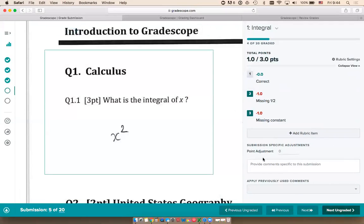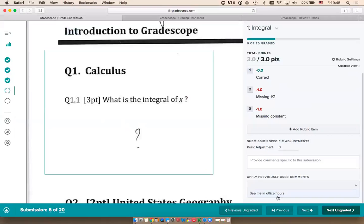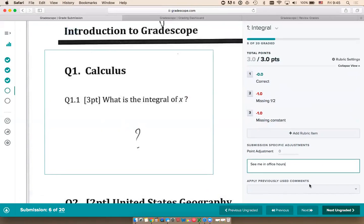This field down here is specific only to the student you're grading. While the rubric is shared among all students, if I want to type a comment or make a point adjustment just for this one student, I can do that here. I can type something like 'see me in office hours' or 'review chapter two,' whatever you want to tell the student. You can reuse these comments, so if I want another student to see me in office hours, I can select that comment without retyping it.